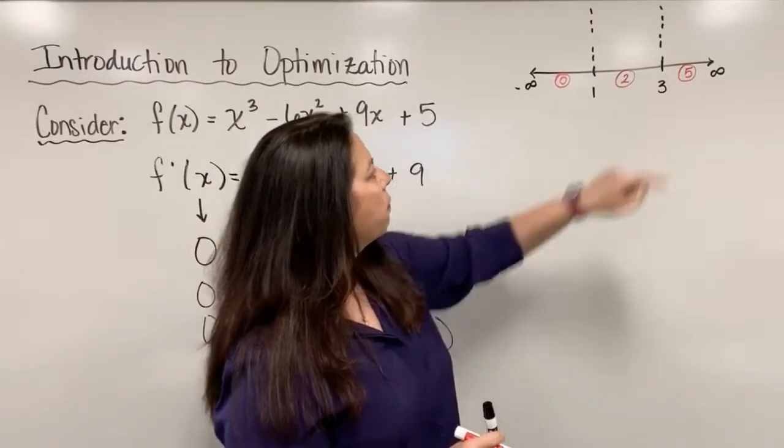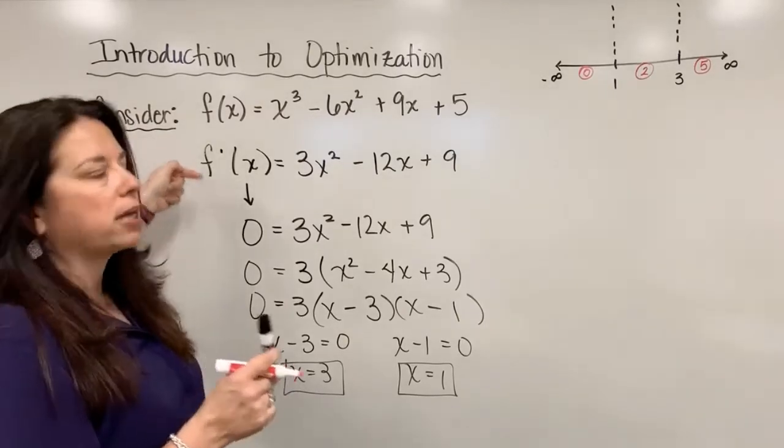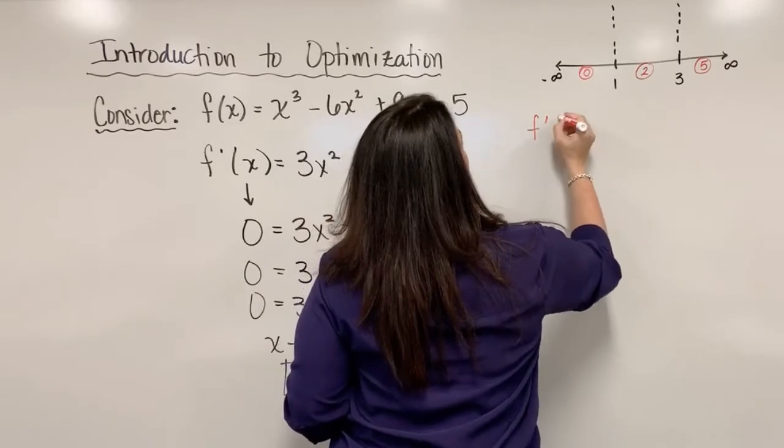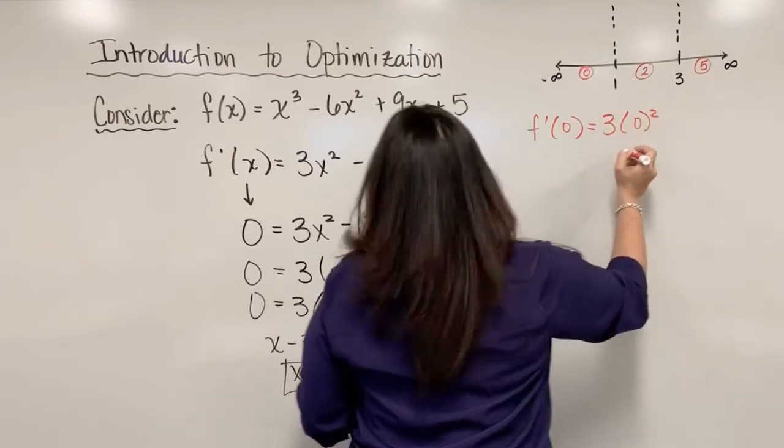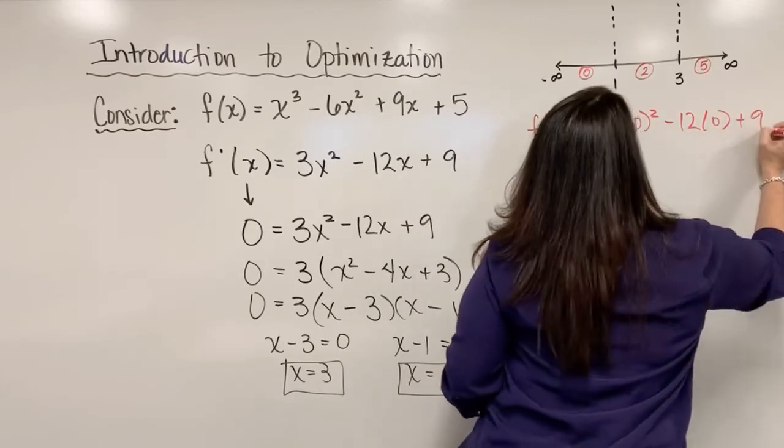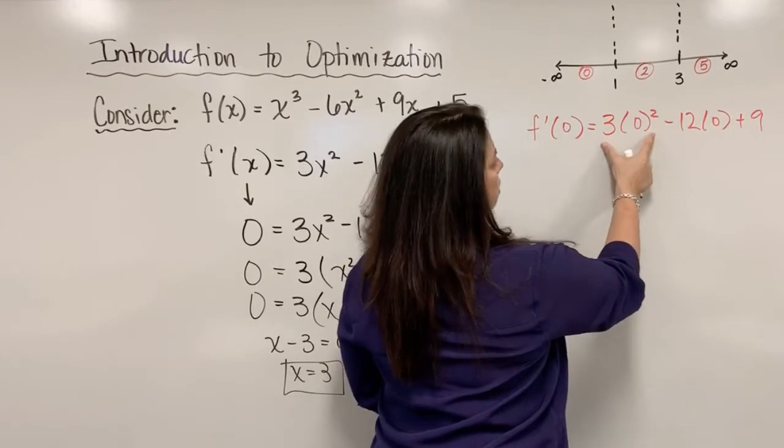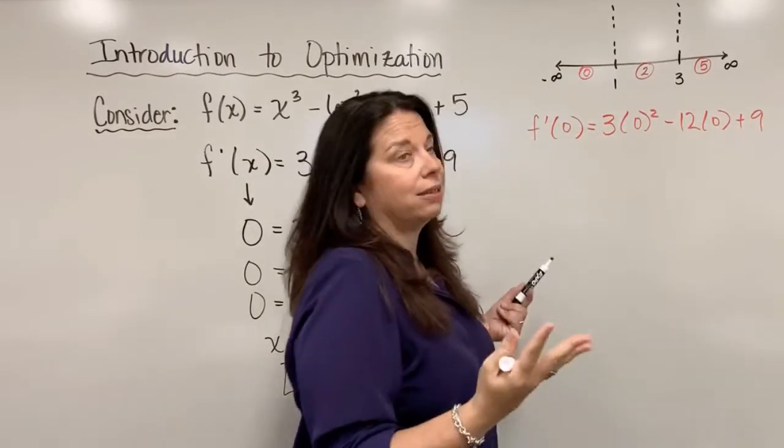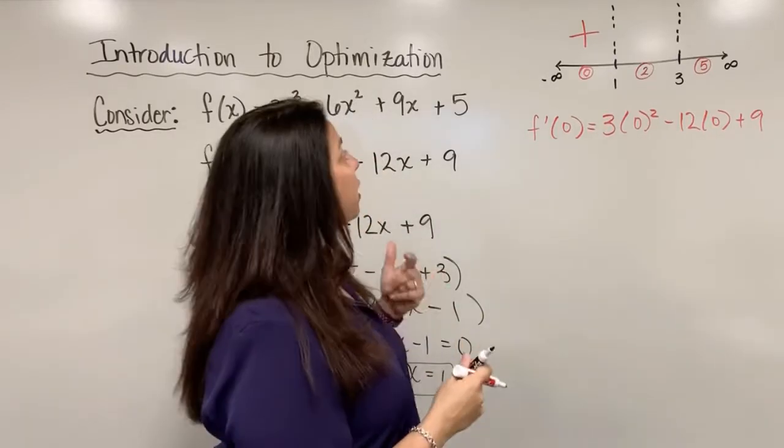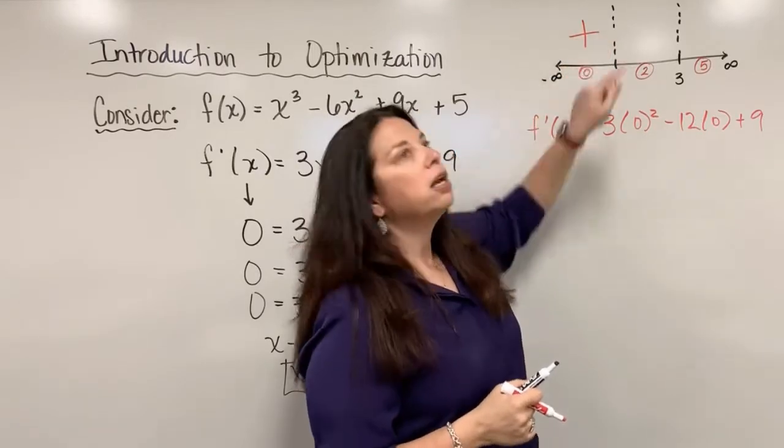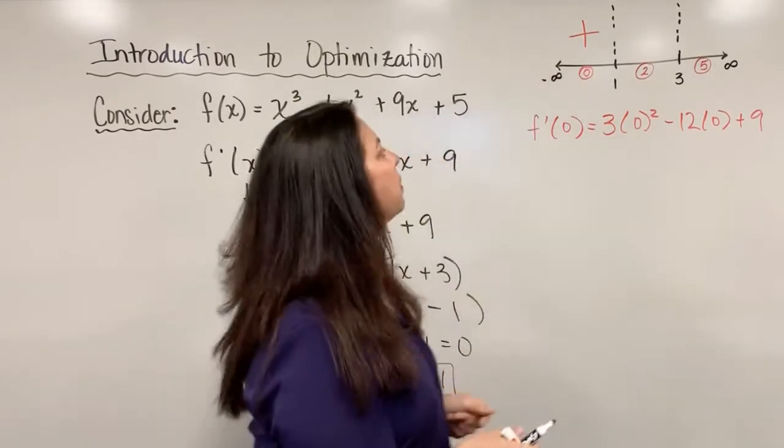So what I will do, the approach here is I will take each one of those test values and I will actually substitute them in for x in my derivative and determine positive or negative. So I have f prime of 0 is equal to, I just need to evaluate my derivative at 0. So we have 3 times 0 squared minus 12 times 0 plus 9. I don't really care at all what the actual value is. I just want to know positive or negative. So when I look here, this of course is 0, this here is 0, I'm left with a positive 9. The important part is that it in fact is positive.